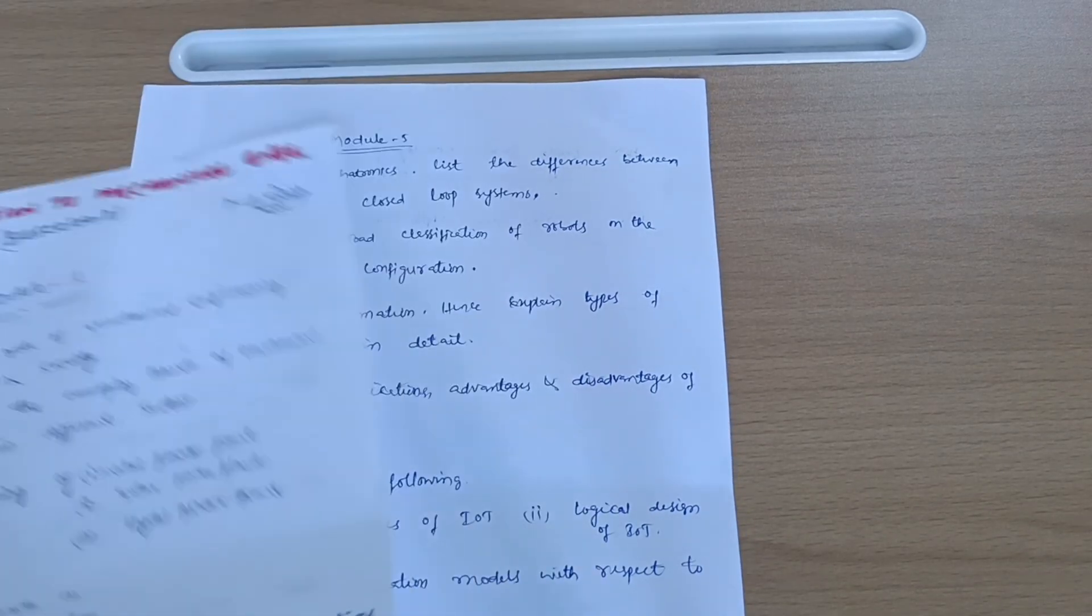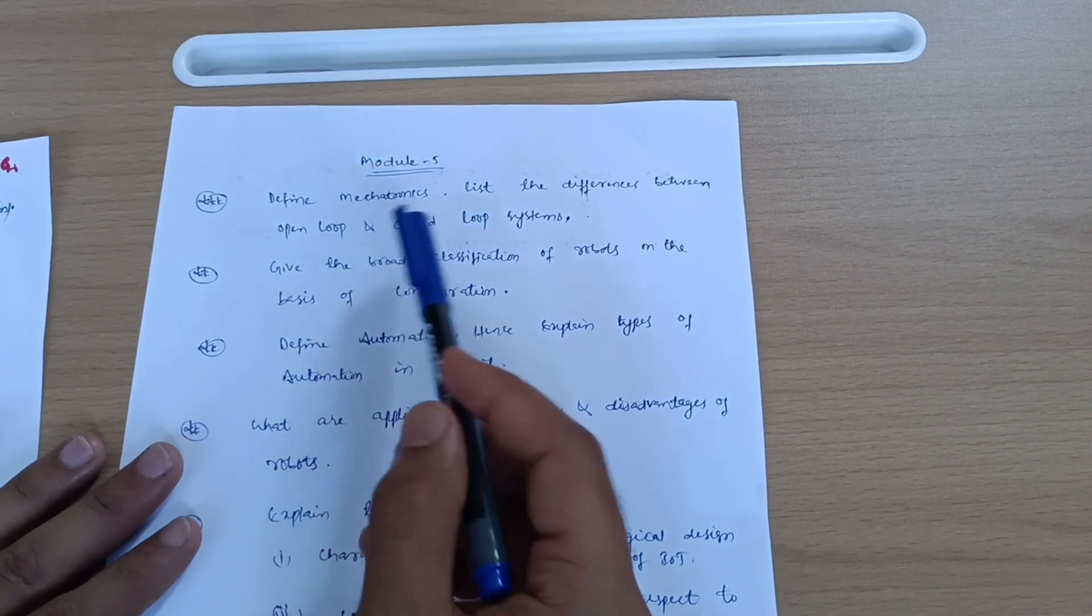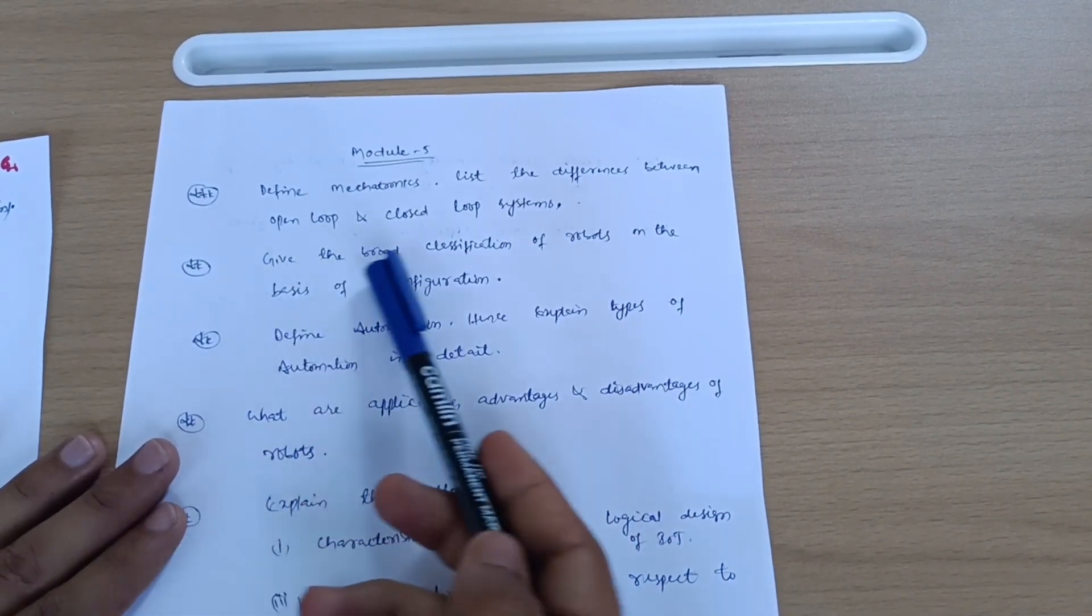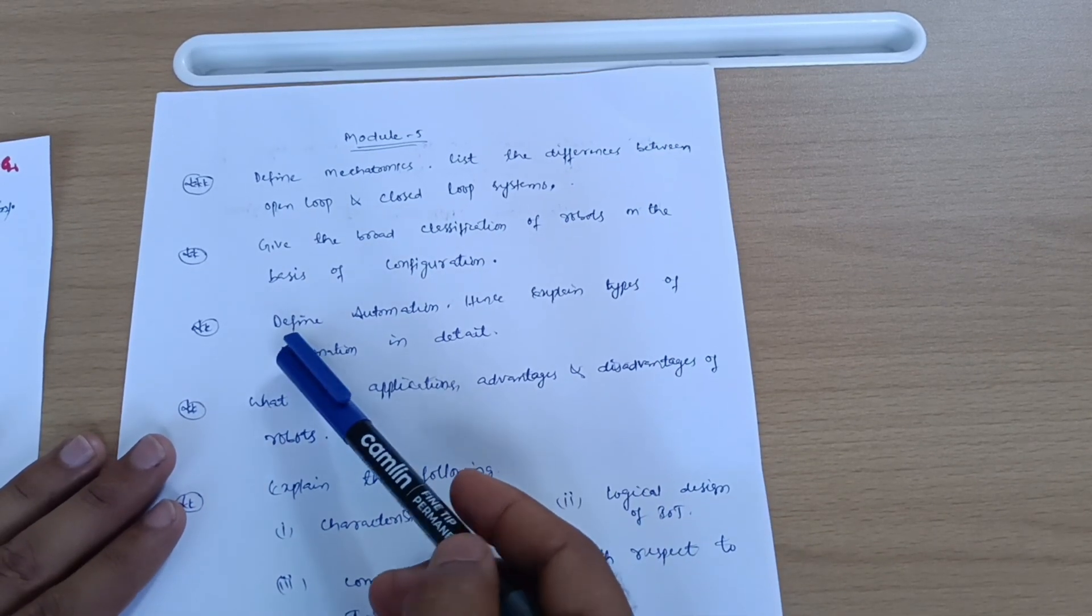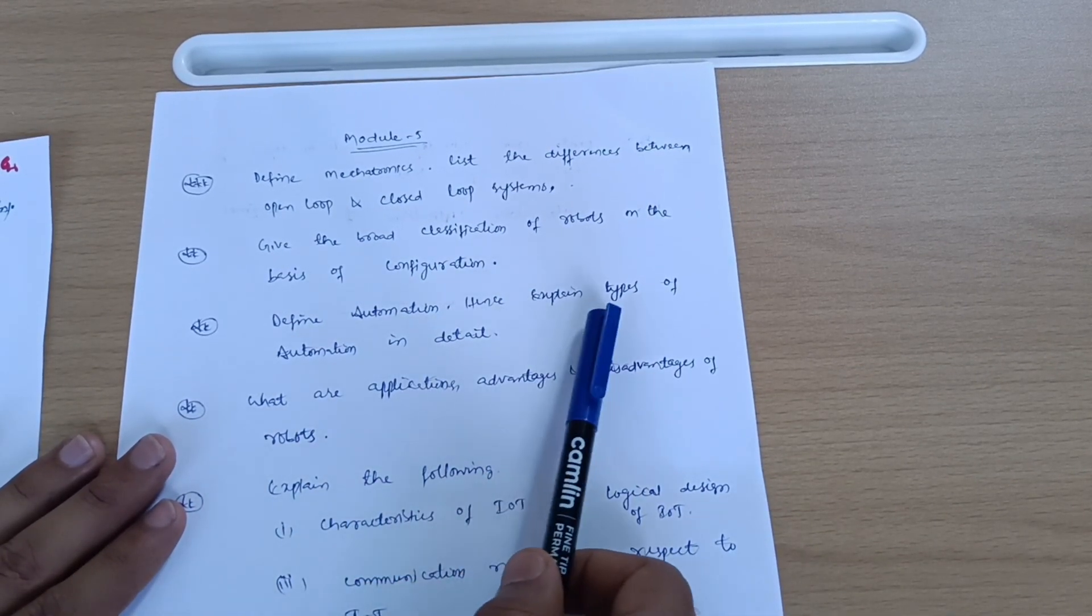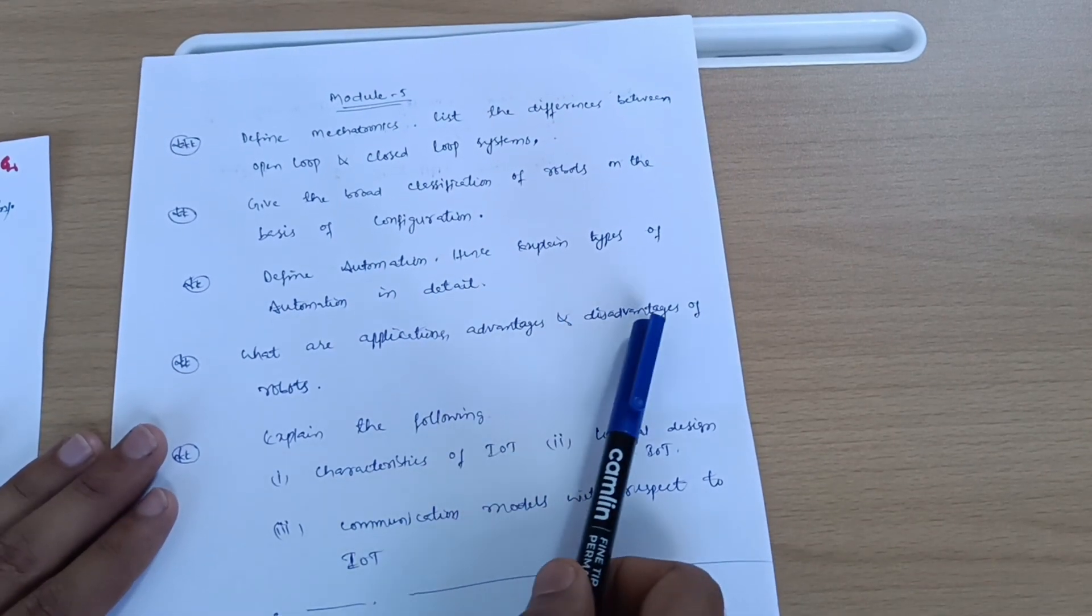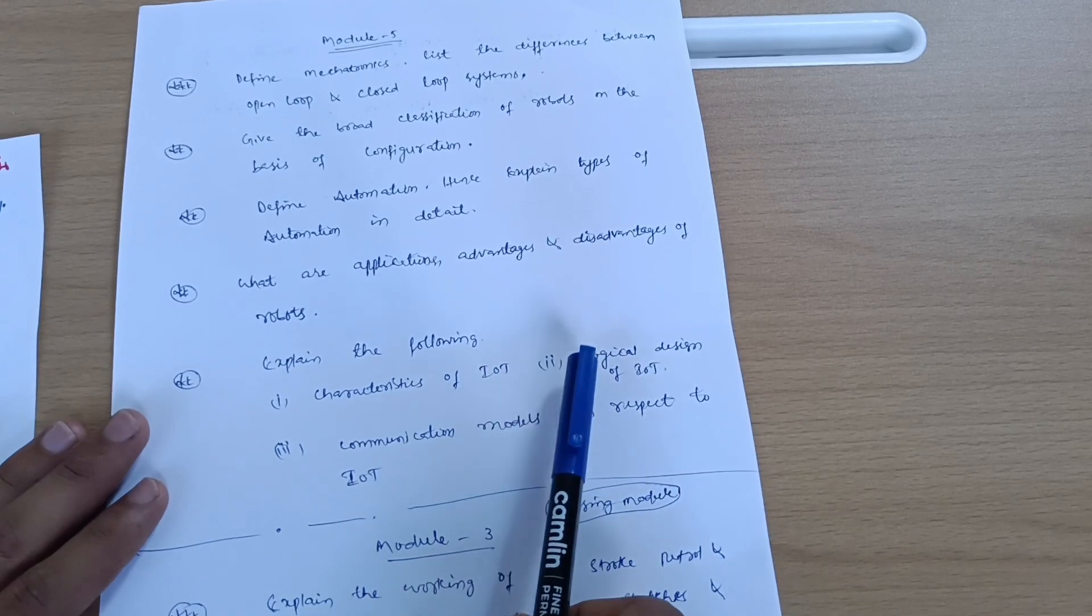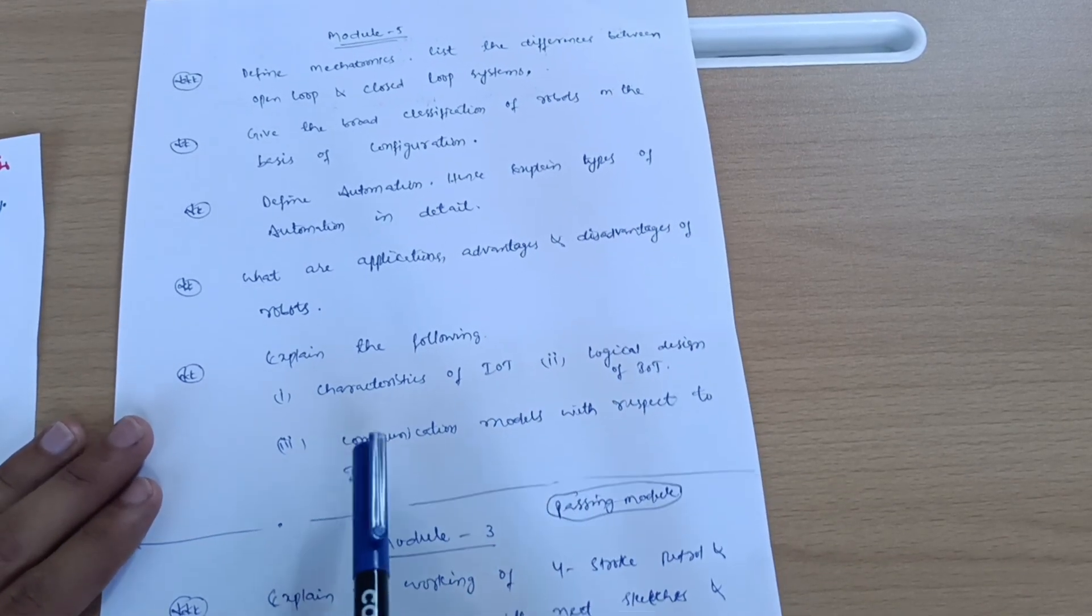Now let's discuss Module 5. Define mechatronics, list the differences between open loop and closed loop systems, give the broad classification of robots on the basis of configuration. Define automation and explain types of automation in detail. What are the applications, advantages and disadvantages of robots? Explain the following characteristics of IoT: logical design of IoT and communication models with respect to IoT. This content is enough for Module 5.